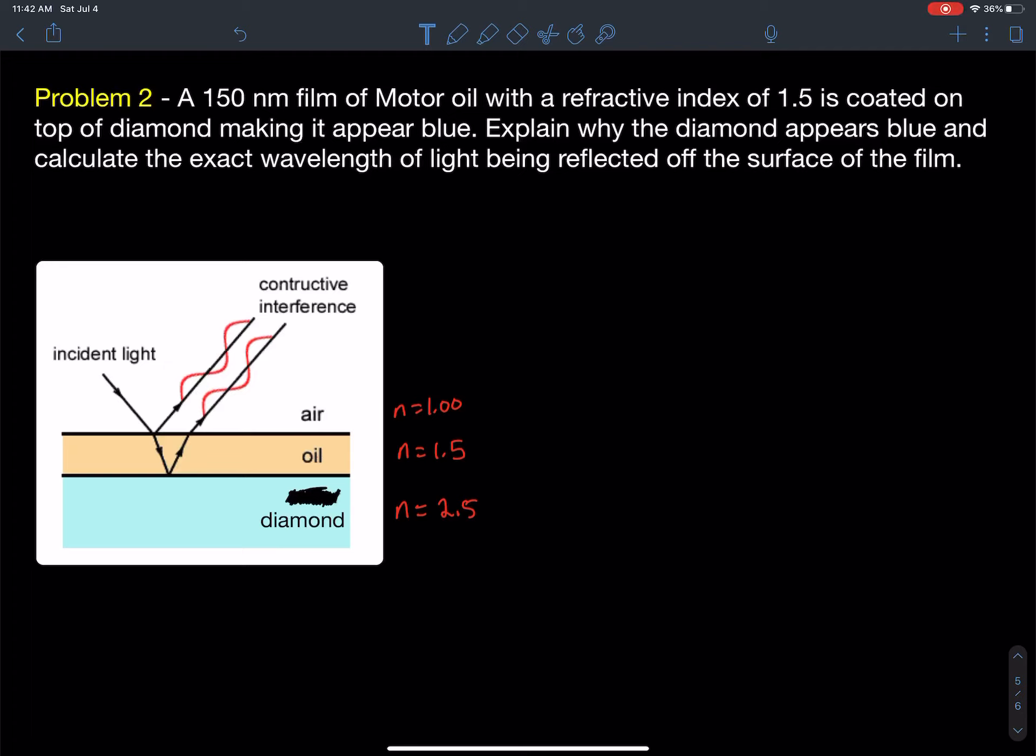Here's another problem of thin film interference. A 150 nanometer film of motor oil with a refractive index of 1.5 is coated on top of a diamond, making it appear blue.